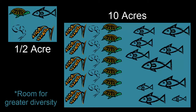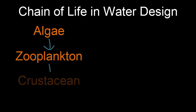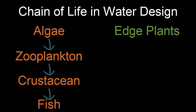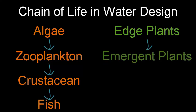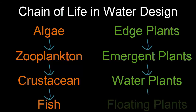In this chapter we discussed making a self-sustaining system where the larger elements such as fish or mammals can be fed by the rest of the system. For example, algae feeds zooplankton, zooplankton feeds crustaceans, which we can trap to feed our fish. Similarly, edge plants provide the environment and nutrients for emergent plants, those emergent plants do the same for water plants, and those in turn support floating plants. All of these things relate back to what we call the chain of life within an aquaculture system.